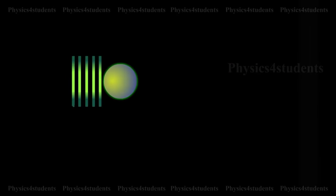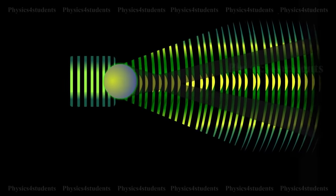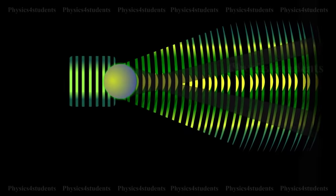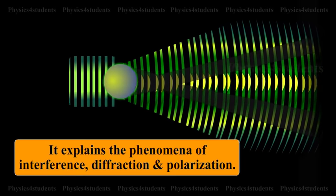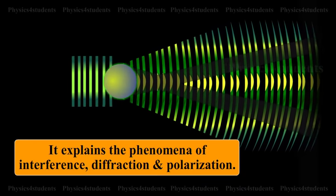The wave theory could satisfactorily explain all the basic properties which were earlier proved by corpuscular theory and in addition, it explains the phenomena of interference, diffraction and polarization.